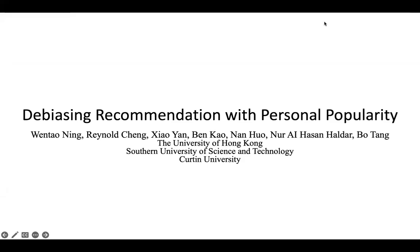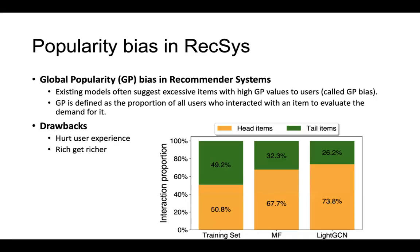Hi everyone, I'm Len Hanin from the University of Hong Kong. I'm a PhD student and this is the introduction of our WWW work, 'Divisional Combination with Personal Popularity.' First we will introduce probability bias in recommender systems — in this paper we call it global popularity bias.